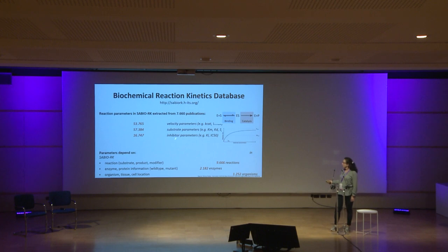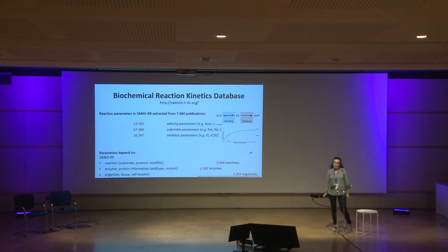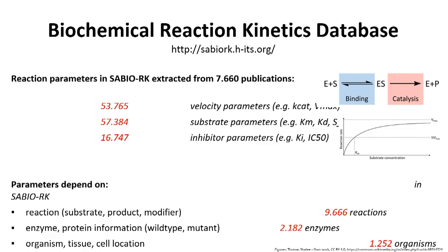We have velocity constants and substrate parameters like Km, and inhibitor parameters, and these data are extracted manually from publications. At the moment we have about 8,000 publications. These data are very important especially for modelers because they want to run simulations with this kind of data, but it's also interesting for experimentalists to get information about evidence of an enzyme or protein in a pathway.